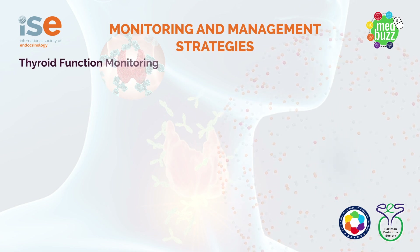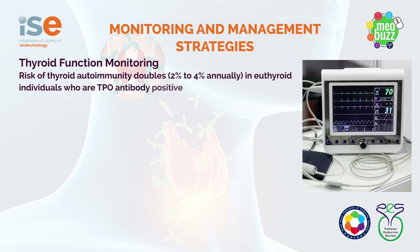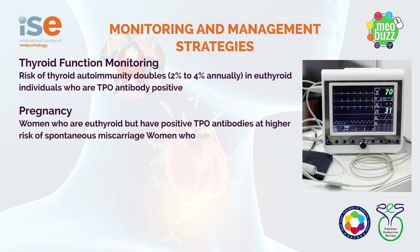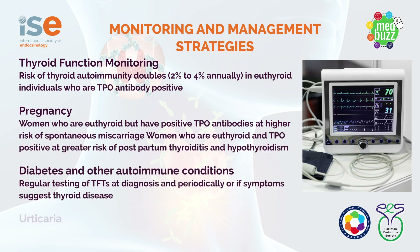So what would we consider to be a reasonable monitoring and management strategy for a euthyroid patient with regards to thyroid autoantibodies? The risk of thyroid autoimmunity doubles from 2% to 4% annually in euthyroid individuals who are TPO antibody positive. So once that TPO antibody status is known, it may be appropriate to perform intermittent testing for thyroid function, particularly in those individuals who either have other underlying disorders or who give early symptoms of thyroid autoimmunity.